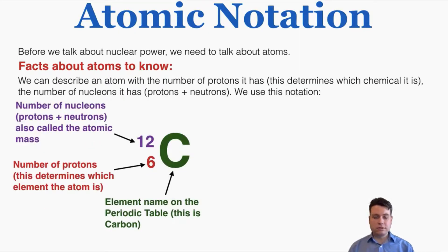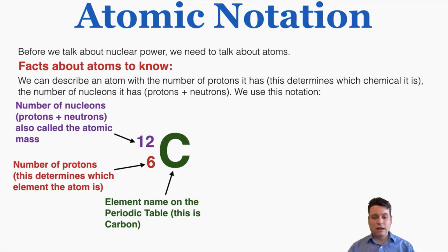We use a specific notation in physics and chemistry to describe atoms, where we use a large letter from the periodic table to indicate which element the atom is. This is an example of a carbon atom because it's capital C. On the top left, next to the letter, we write the number of nucleons — the protons plus neutrons — the atom has. This is also called the atomic mass because most of the mass exists in the nucleus.